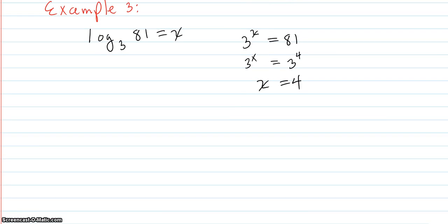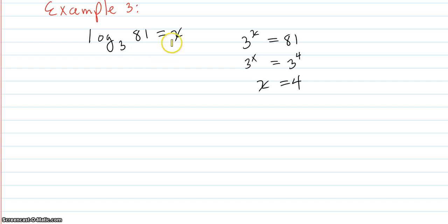Example 3: log base 3 of 81 is x. So x is the exponent you put on the base 3 to get 81. You just write it right down. And then you maneuver 81 into the base 3, and 81 is 3 to the fourth power. You have the same base matched up, so x will equal 4.